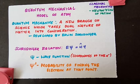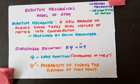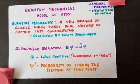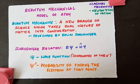Quantum mechanics is a new branch of science that takes the dual nature of matter into consideration — matter can behave as both a wave and a particle. Taking this concept into consideration, a new branch of science was developed by Erwin Schrödinger, called quantum mechanics, and he came up with a new model of the atom.